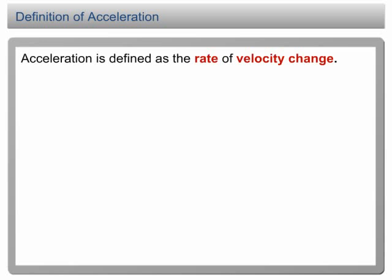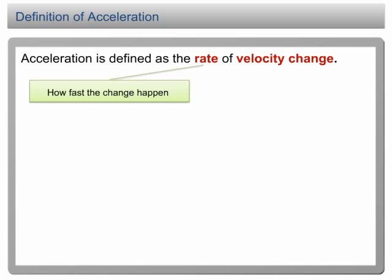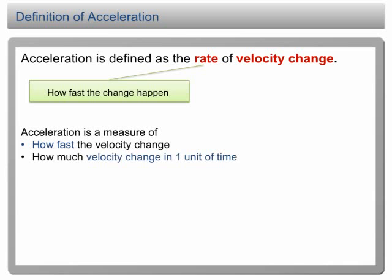Definition of acceleration. In your textbook or reference books, you may find that acceleration is defined as the rate of velocity change. The word rate means how fast a change happens. Therefore, acceleration is a measure of how fast a velocity change or how much velocity change in one unit of time. Keep in mind that, in physics or chemistry, when we talk about rate, what we mean is the rate of time. And rate of time means how fast a change happens.